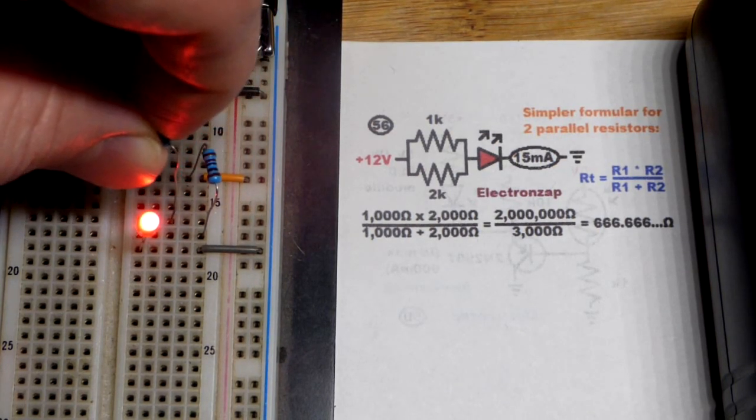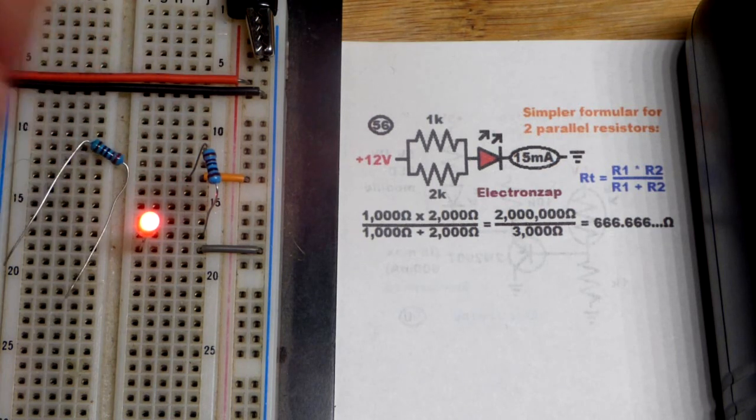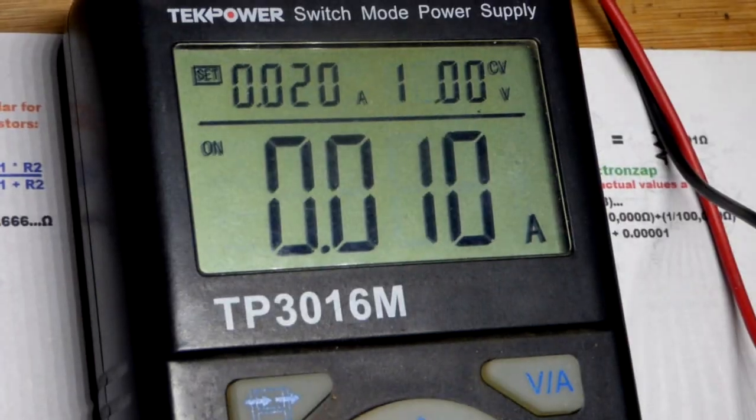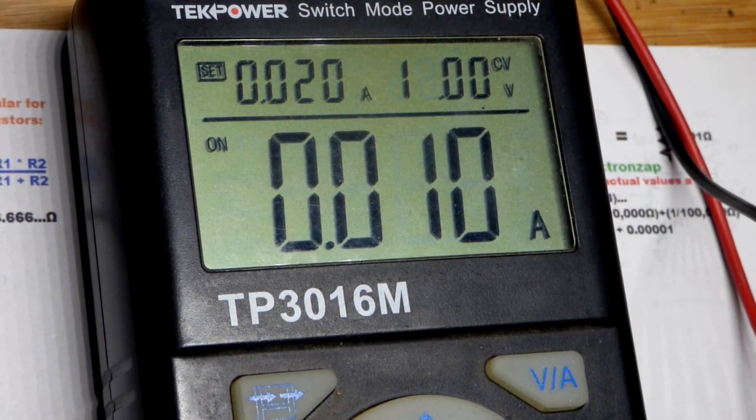So with just that 1K resistor, we're probably just fine. We got 10 milliamps current. In fact, I'll pull that off to the side there, put it off to the side. And there you can see about 10 milliamps of current.